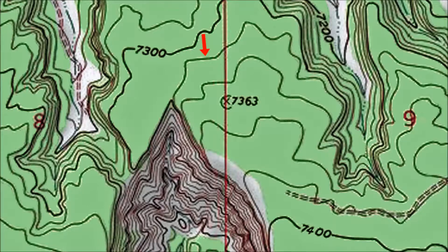But let's make sure that's true. If I'm right, traveling one contour line up from the 7,300 foot index contour line gets us to the 7,320 foot contour line. Traveling two contour lines up from the index contour line should take us to the 7,340 foot contour line.